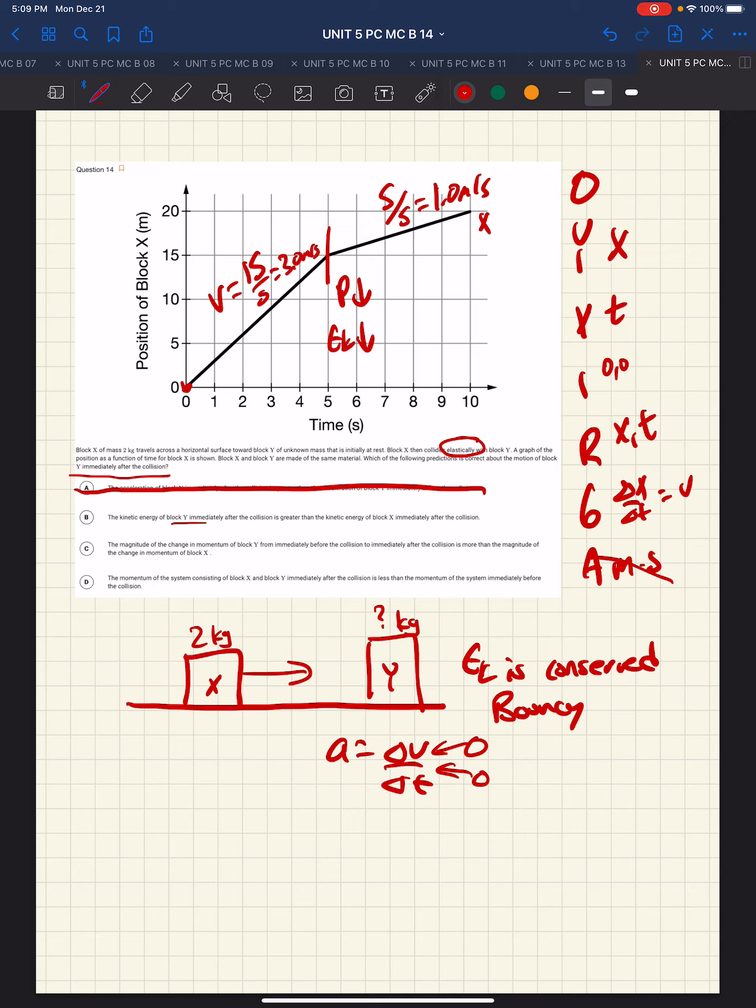Kinetic energy of Y immediately after the collision is greater than the kinetic energy of X immediately after the collision. So, that's a possibility. We know that the speed of Y increased, the speed of X decreased, so we have a change in kinetic energy. We'll come back to that after we look at the others.